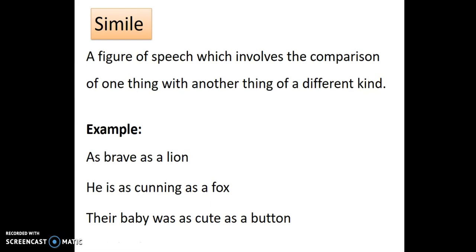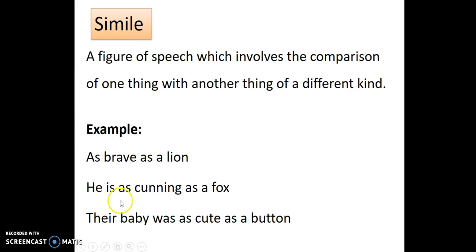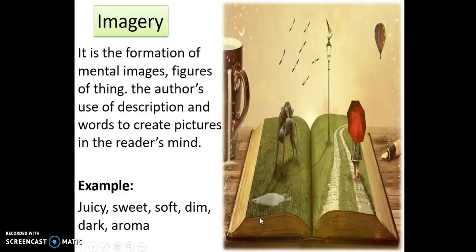Simile is a figure of speech which involves the comparison of one thing with another thing of a different kind — a direct comparison. For example: 'My brother is as brave as a lion.' We compare my brother with a lion. Other examples: 'He is as clever as a fox,' and 'Their baby was as cute as a button.'